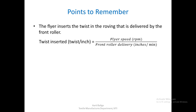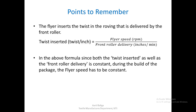Twist per inch is calculated as flyer speed in RPM divided by the front roller delivery in inches per minute. Since both the twist inserted and the front roller delivery are constant for any particular roving being produced, during the build of the package the flyer speed has to be constant. Since two of the variables in the formula are constant, the flyer speed also needs to be constant.